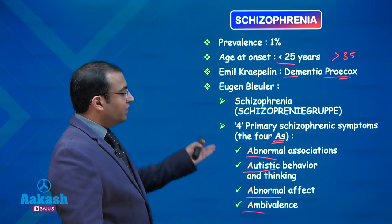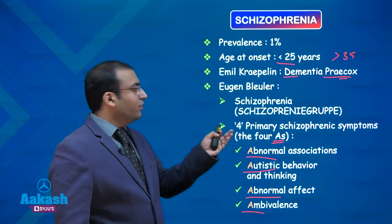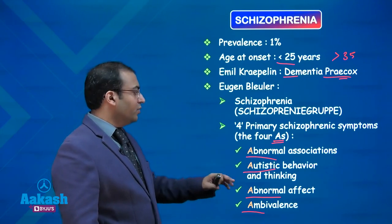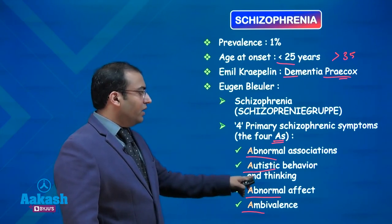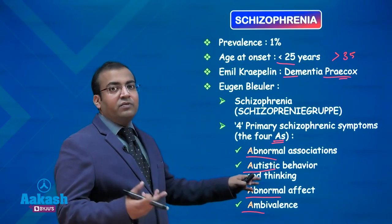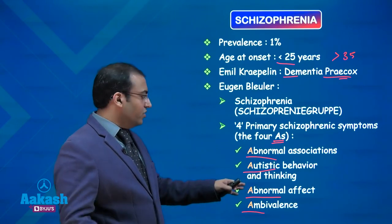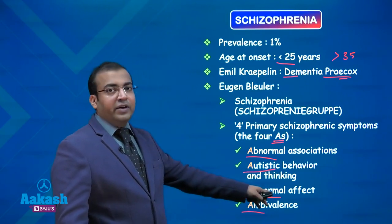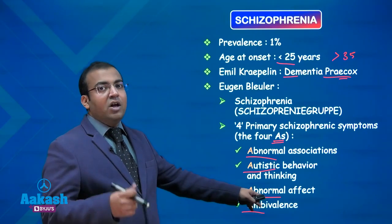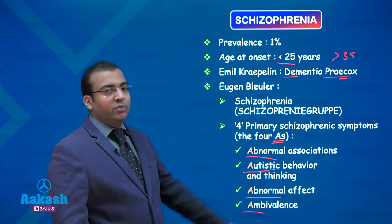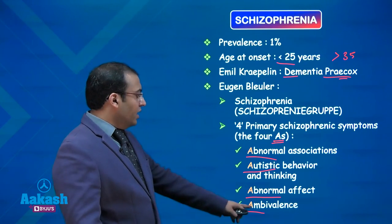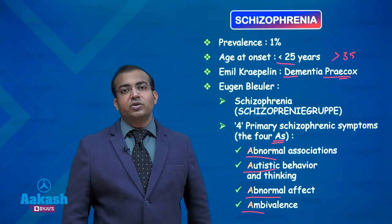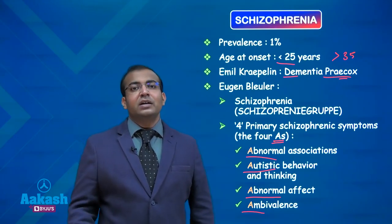A patient with schizophrenia, as observed by Bleuler, has abnormality in association of thoughts and affective responses. Autistic behaviour and thinking means the thinking and actions are very withdrawn from social structure, with a concrete way of thinking. There is abnormality of affective responses — responses are blunted, absent, or inappropriate — and there is difficulty arriving at conclusions, resulting in ambivalence in decision-making.